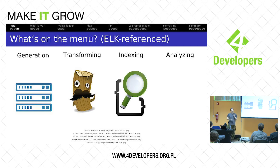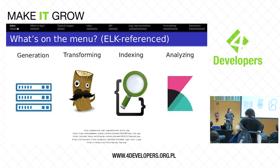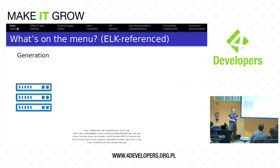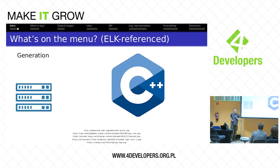Then for indexing and gathering logs, you could use Elasticsearch. And then finally, for visualizing certain things and analyzing, you could use Kibana. So today we're going to just talk about the first element in the chain — generation of the logs. And of course this is a C++ talk, so all the code examples and ideas will be presented in C++.